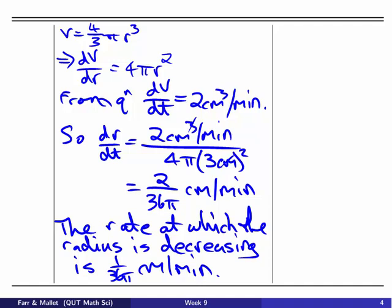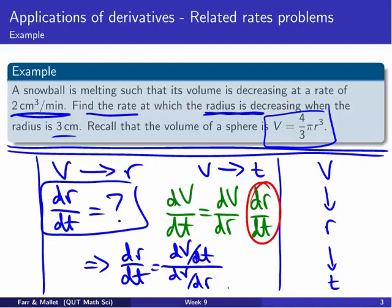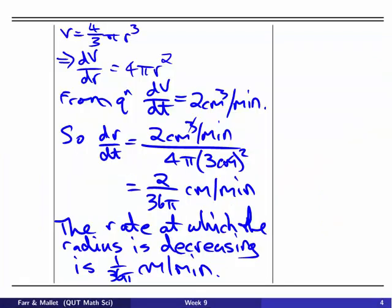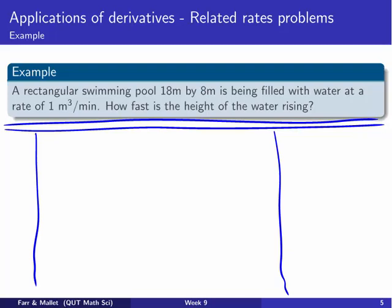You might be wondering about negatives in there, but we're given in the question that the volume is decreasing at a rate of 2, so we've implicitly there said that decreasing is a positive value. So positive value for 2 there, ending up with a positive value here. It's still a decrease because of the way we've assigned positive and negative quantities. So that's our rate of decrease for the radius. Let's just check out one more final example before we finish this up.